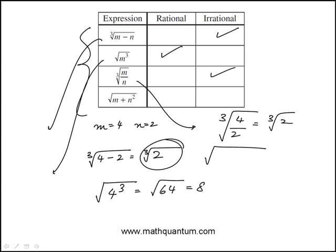And then finally square root of m plus n square, so 4 plus 2 square, that's 4 plus 4. Square root of 8, that's 2 root 2, that's irrational.